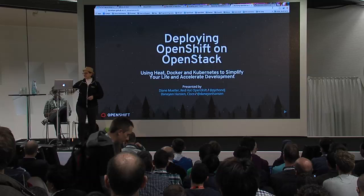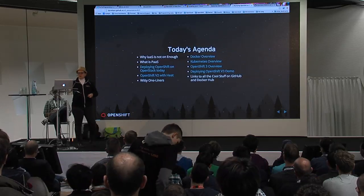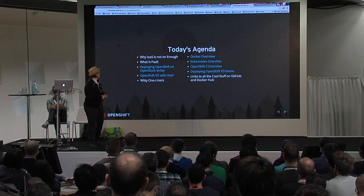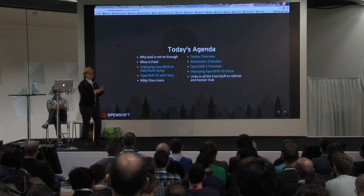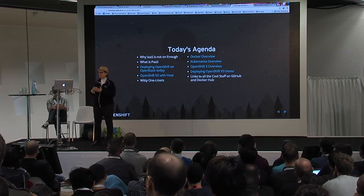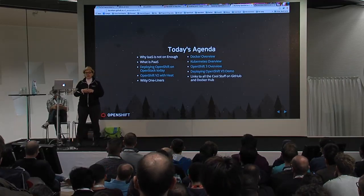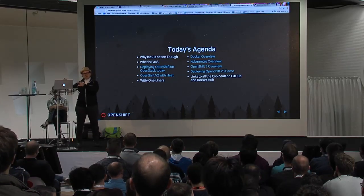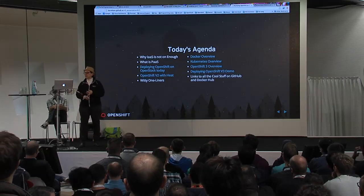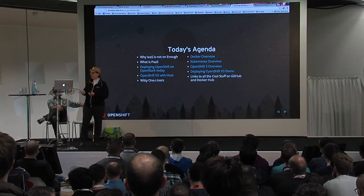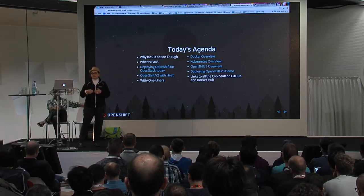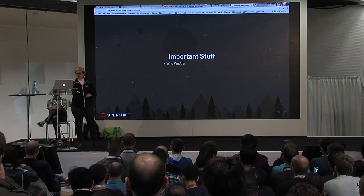In 39 minutes or less! Today's agenda: why infrastructure as a service is not enough when you're delivering your clouds; what PaaS is; how to deploy OpenShift on OpenStack today — the current release and its flavors, how to do that with v2. Then we'll give you a quick overview of Docker and Google Kubernetes, both open source projects that really rock OpenShift v3, with a demo and tools to get started.